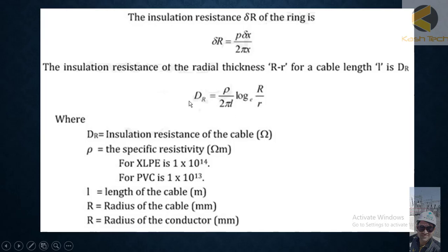You should know what parameters: the specific resistivity in ohm meters. For example, for XLPE cable is 1 × 10^14, and for PVC is 1 × 10^13. The length of cable, which you can easily find out. The radius of the cable, which also we can find out. The radius of the conductor, you can find out.